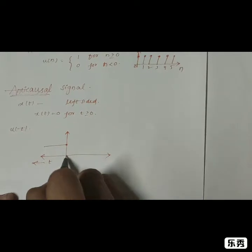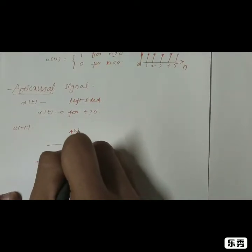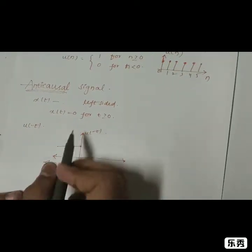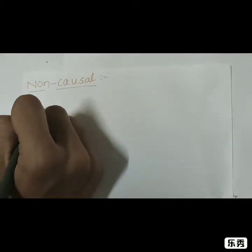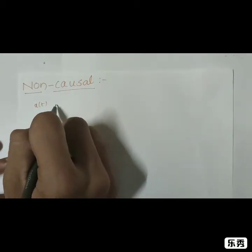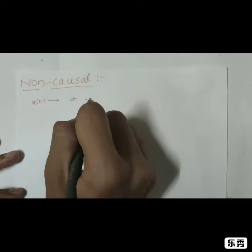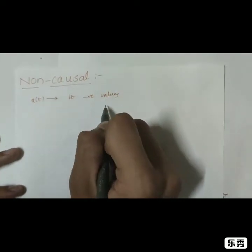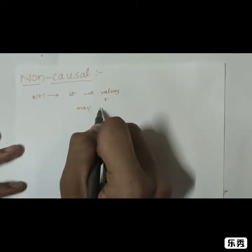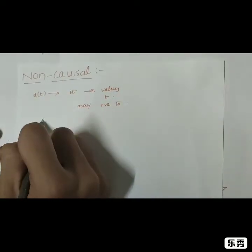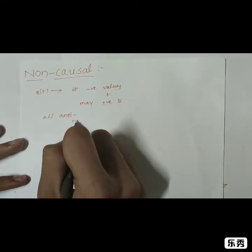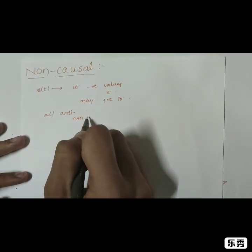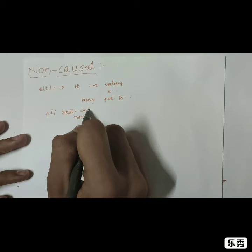For all positive values of t, the anti-causal signal's value is 0, making it an example of an anti-causal signal. A function x(t) is non-causal if it exists for negative values of t, and it may or may not exist for positive values of t. That means all anti-causal signals are non-causal signals, but not all non-causal signals are anti-causal signals.